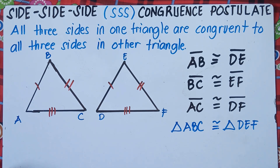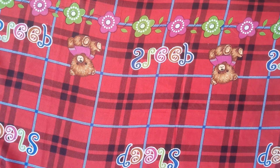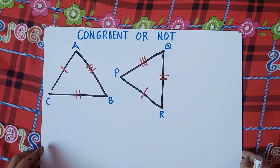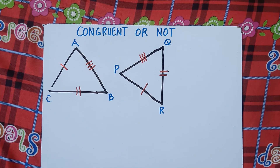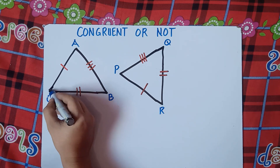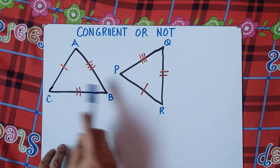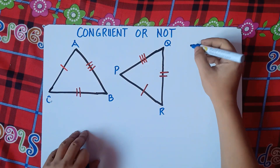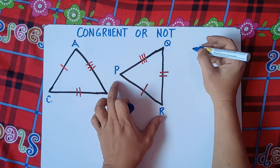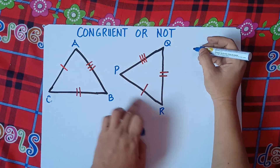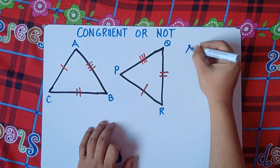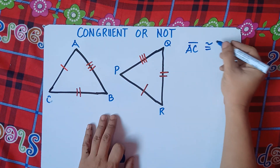Let's try an example — you tell whether it's congruent or not. You can pause the video. Let's check: we have given triangles with markings. So this side is congruent to this side. We can say that segment AC is congruent to segment PR.